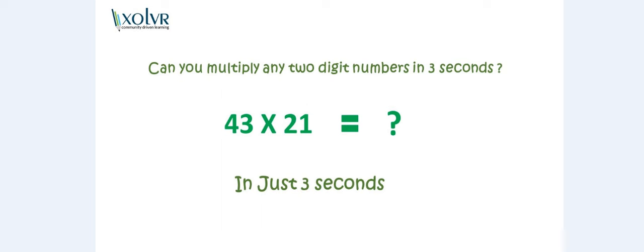So let's go to our trick. Basically, we have the number which is 43 into 21. We have to find 43 into 21, so we do it in basically three steps. First of all, we have to mark three blanks here.